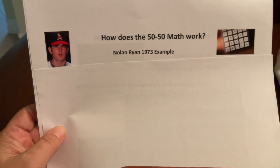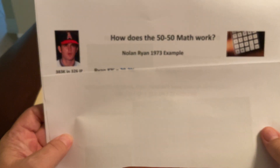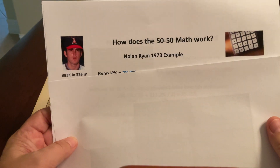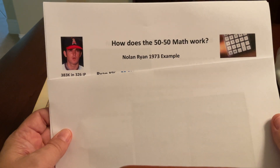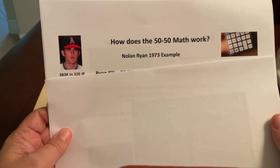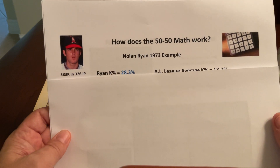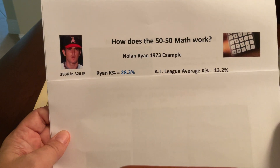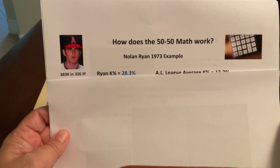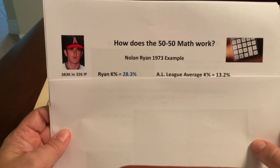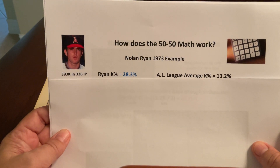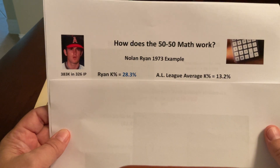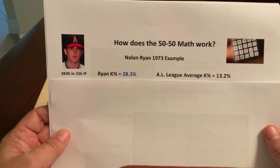He had quite an amazing year in 1973, pitching for the Angels. He had 383 strikeouts in 326 innings pitched — about 10.5 per game. His strikeout percent was 28.3%, meaning roughly 28.3% of everybody that came to the plate would strike out against Ryan, which at that time was an extremely high percentage. By comparison, the American League average strikeout percent was 13.2% that year.